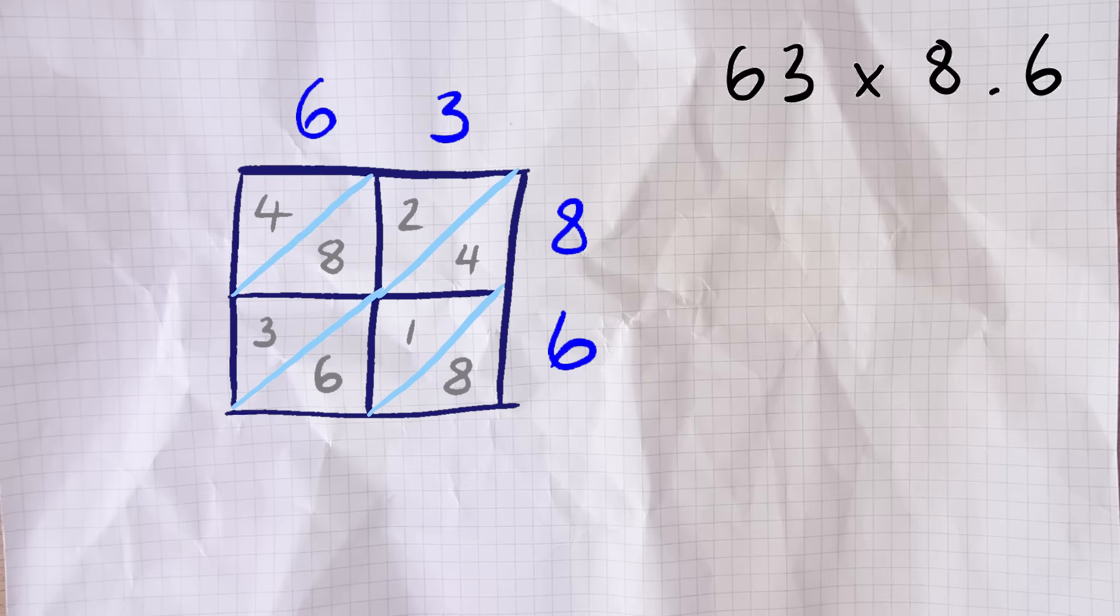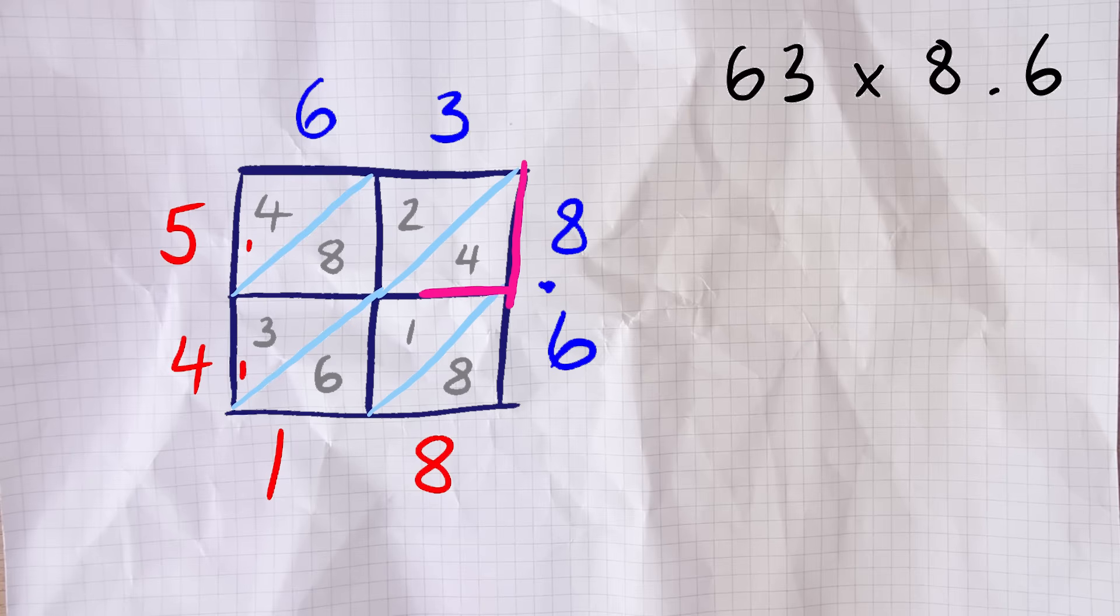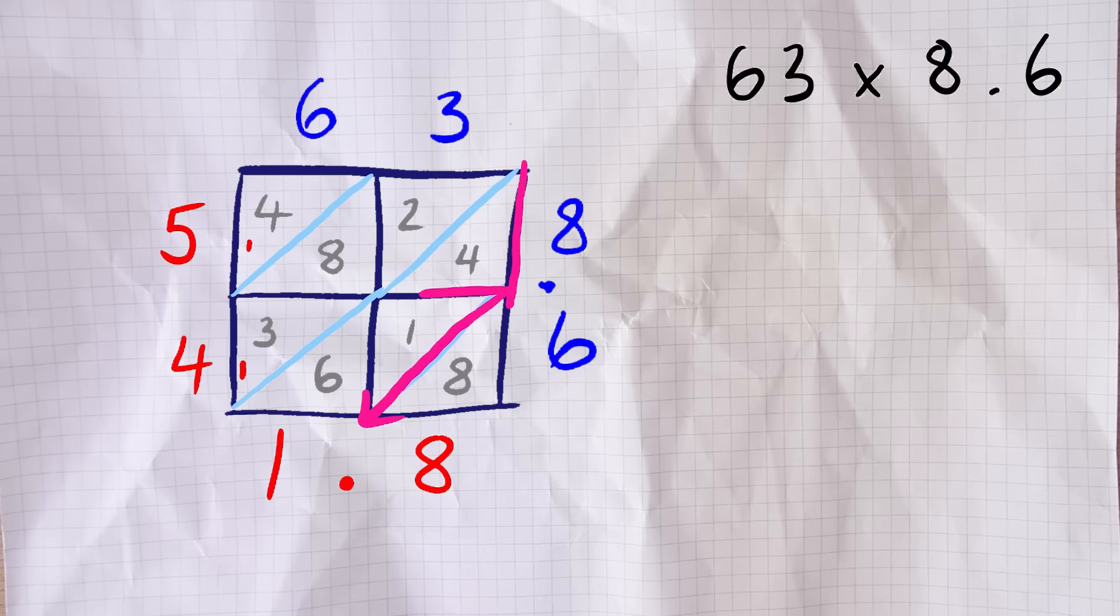I wanted to show you this because knowing where to put the decimal point might not be immediately obvious with these ones if you haven't seen them before. We can see the decimal point between the 8 and the 6, we follow that across, but there isn't a decimal point in the 63. If there was one it would be after the 3, it would be 63.0 if you like. So we follow that down until it meets the line coming across from the 8.6. We follow that diagonal down from there and it's pointing us to between the 1 and the 8, which gives us 541.8. Comparing that with our estimate at the start which is 540, that sounds pretty good.